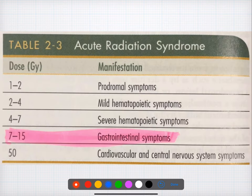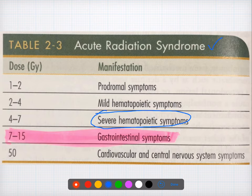Question forty-four: in acute radiation syndrome, the manifestations vary based on dose. Severe hematopoietic symptoms are seen at four to seven gray. If the dose is more than 50 gray, CVS and CNS symptoms will be the predominant manifestations.